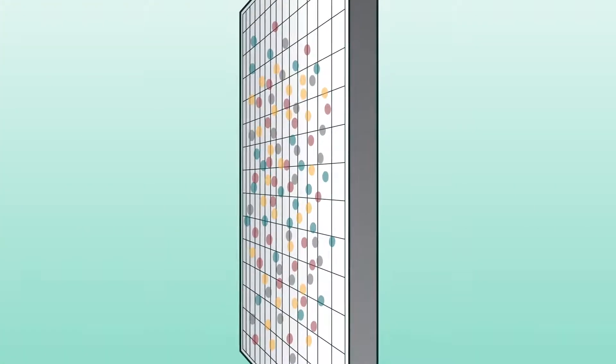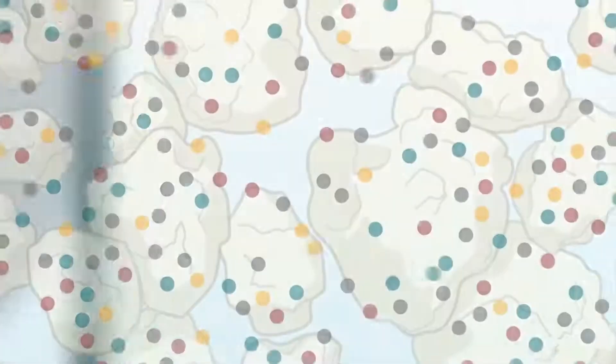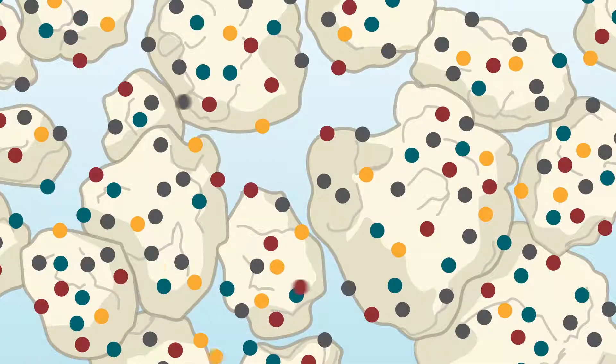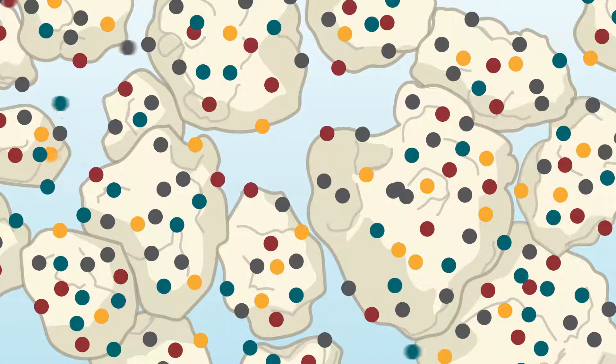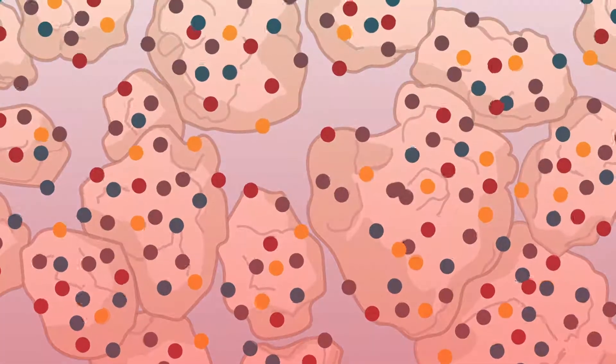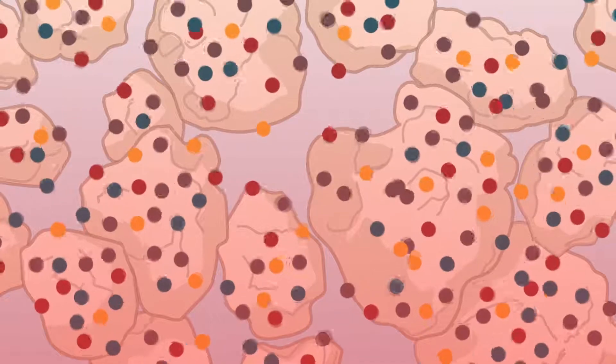While sorbents are effective, they're limited in the amount of contaminants they can capture. As sorbents clean the air, they eventually become saturated and stop adsorbing. However, they can be cleansed and regenerated by heating them to release captured contaminants, so sorbents can be reused over numerous cycles of adsorption and regeneration.